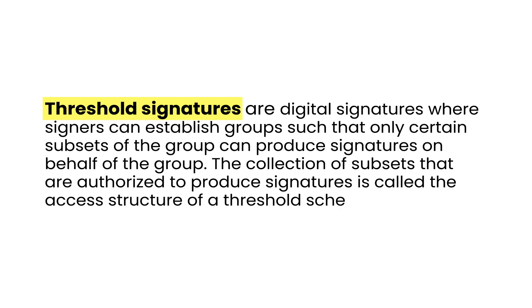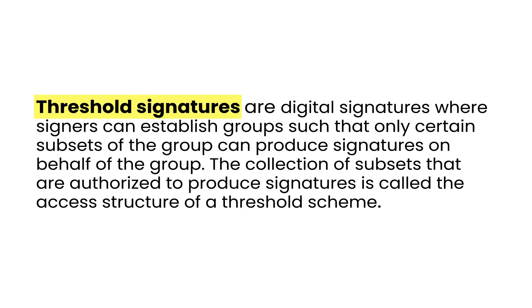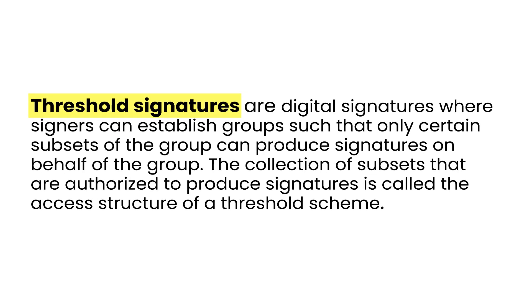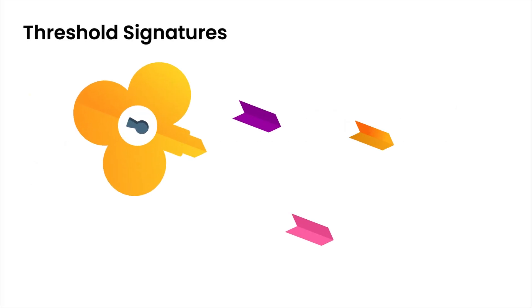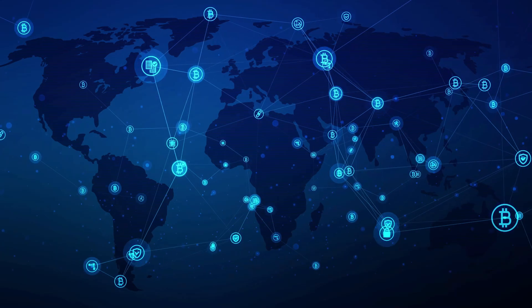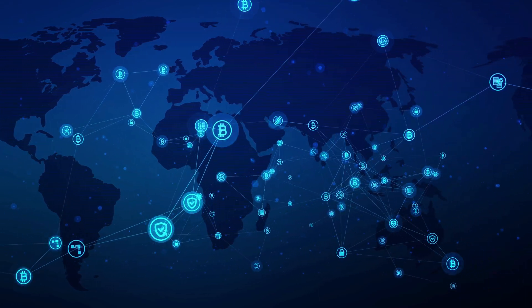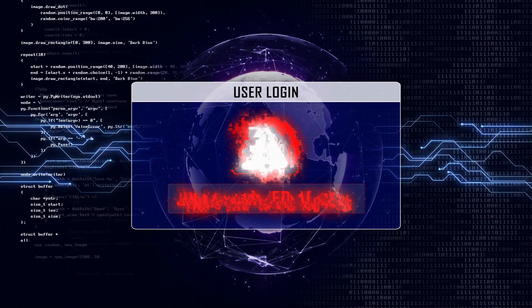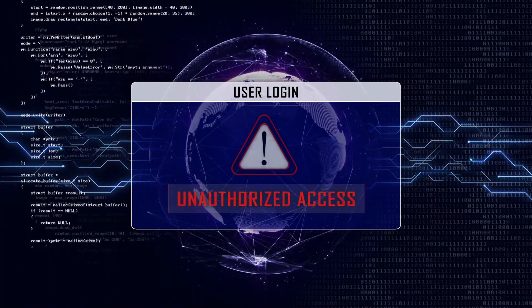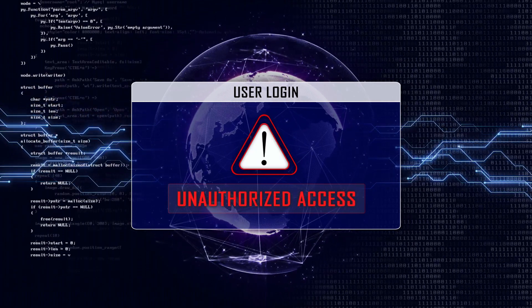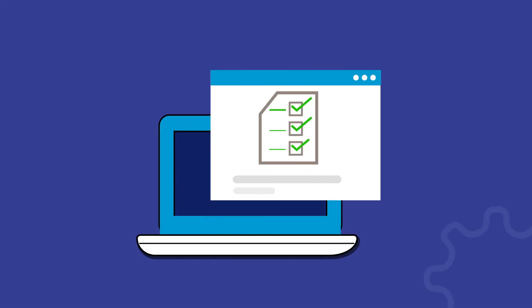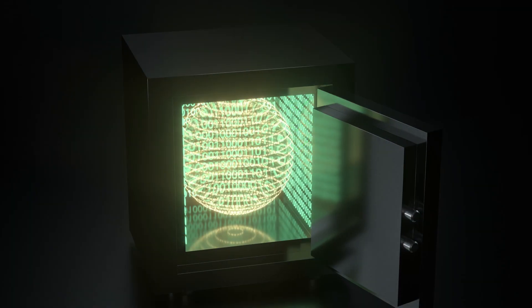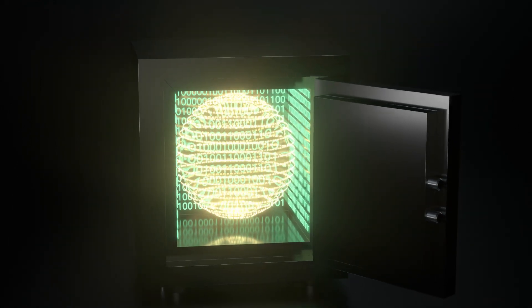In other words, MPC wallets use a technique called threshold signatures to ensure that private keys are only accessible to authorized parties. With threshold signatures, a private key is split into multiple shares that are distributed among different parties, and to access the private key and manage the crypto assets, a certain number of shares must be combined. It becomes really difficult for anyone to gain unauthorized access to the private key or the cryptocurrency assets. Plus, the wallet requires multiple approvals from different parties before a transaction is executed. This is what makes MPC wallets much safer and more secure than traditional crypto wallets.